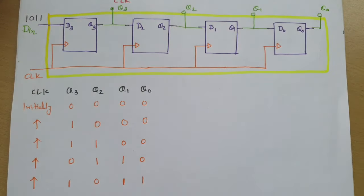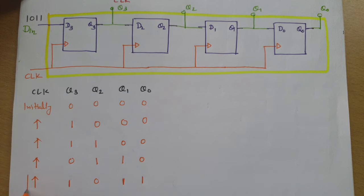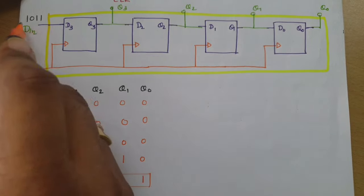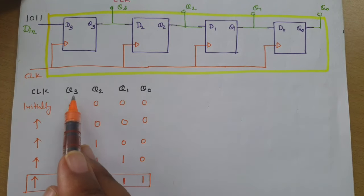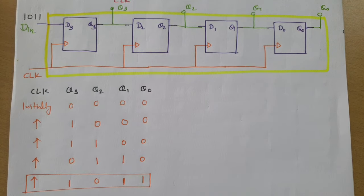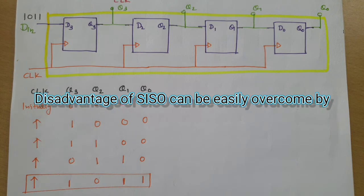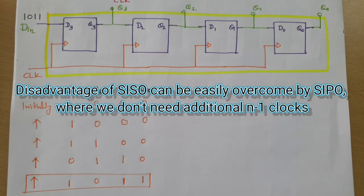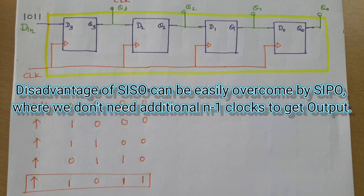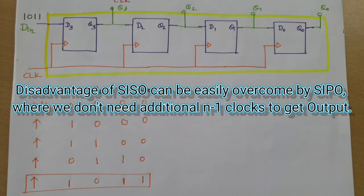After four clocks, the parallel output is 1-0-1-1 at Q3 Q2 Q1 Q0. This highlights the advantage over Serial Input Serial Output: with SISO we need an additional N minus 1 clocks to get the complete output serially, but with Serial Input Parallel Output we do not need those additional N minus 1 clocks.